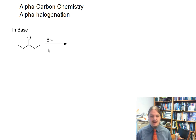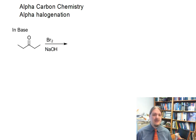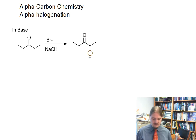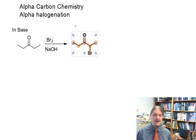I'm going to use bromine. This also happens to work with chlorine and iodine, though sometimes iodine is troublesome. And like the acidic version, you end up with a halogen at the alpha position.